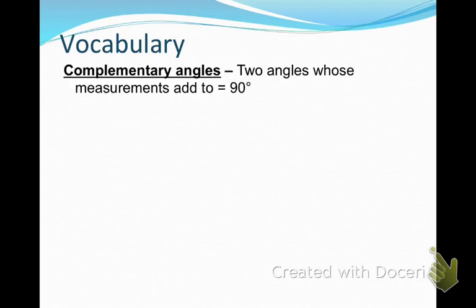The first kind of angles we're going to talk about are complementary angles. These are two angles whose measurements add up to exactly 90 degrees.